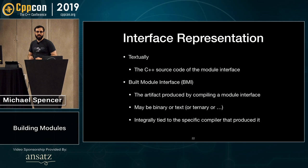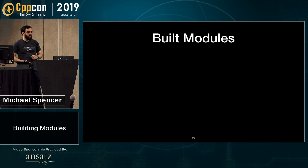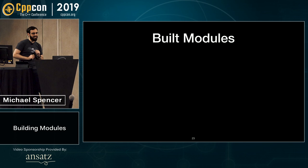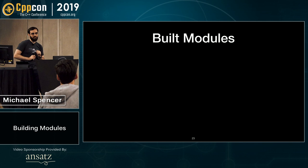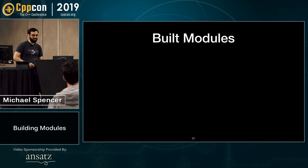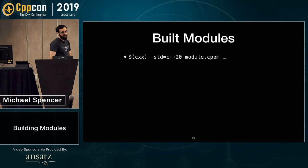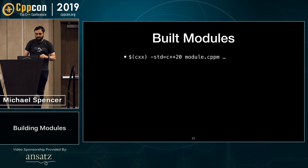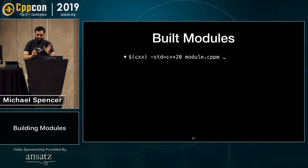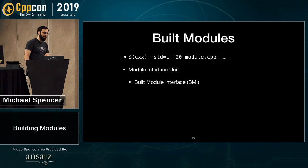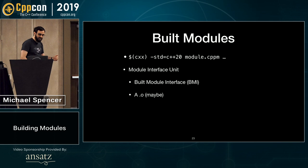To do otherwise would overly constrain implementations. Modules expose basically every part of C++, and any change in internal representation changes these files. How do you build an individual module? You call your compiler, tell it you're in C++20 mode, and pass it a module. If you're compiling a module interface unit, you're going to get a BMI. You'll also get a .o, maybe. Why maybe? There are two different ways you can handle a module interface.